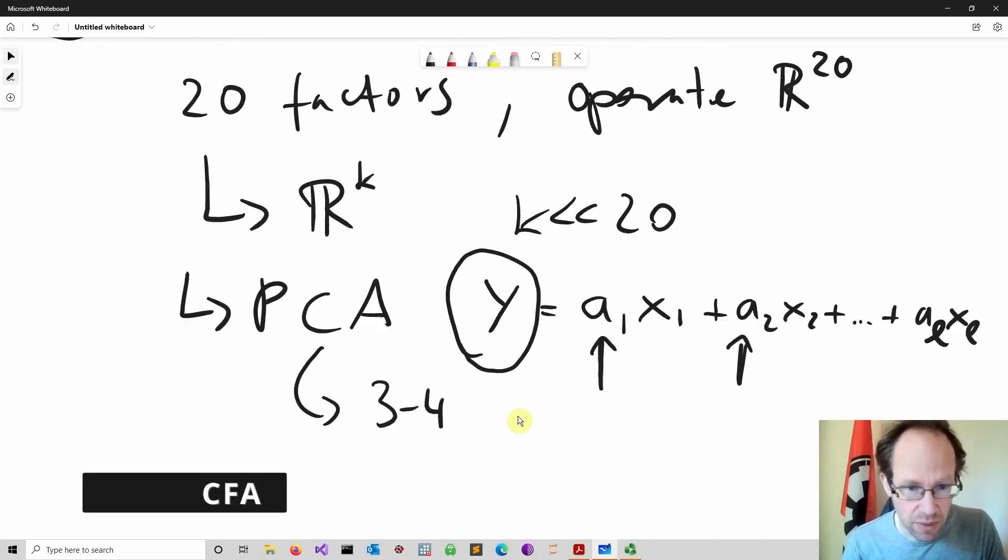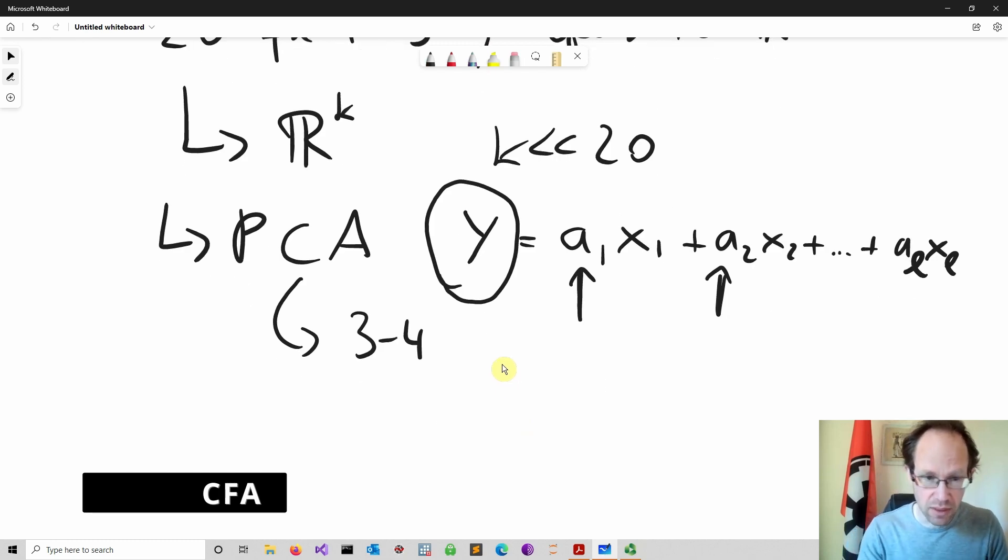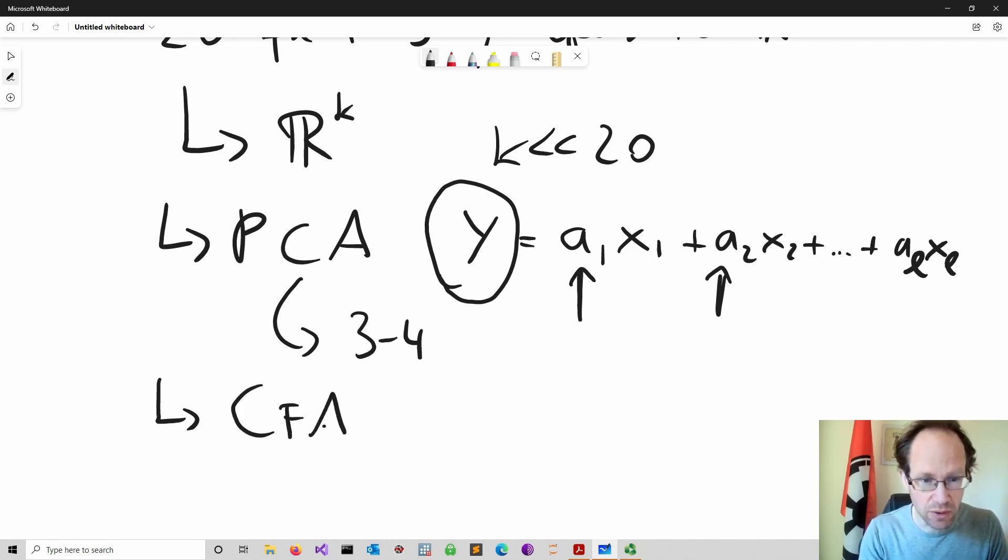So the other way is what you call factor analysis and there's a special subtype, and this is CFA, so that's confirmatory factor analysis. The main difference is in terms of how the dimensions are reduced. The confirmatory factor analysis has at its core a so-called measurement model.